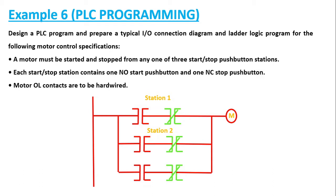This is the ladder diagram for this particular question. The normally closed contacts are the stop push buttons, and the normally open contacts are the start push buttons. Now, how do we justify this is the correct ladder diagram? Let us analyze it. The green ones are normally closed contacts, which act as short circuits, and I have represented them in green color accordingly.